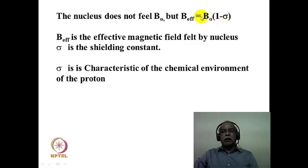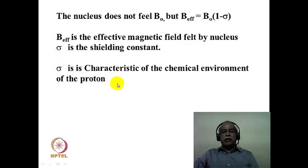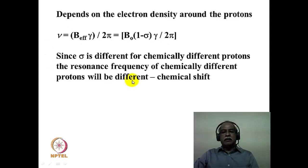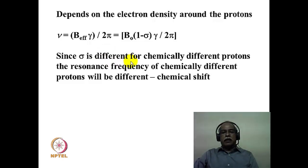Sigma is proportional to the applied magnetic field, so B0 minus B0·σ is the correct expression for the effective magnetic field felt by the nucleus. Sigma is a characteristic feature of the chemical environment of the proton; it depends on the electron density around the particular hydrogen and hence sigma will be different for different types of hydrogens. Once we incorporate the shielding constant into the basic NMR equation, we can recognize why different hydrogens come at different frequencies in the NMR experiment — and this is the concept of chemical shift.